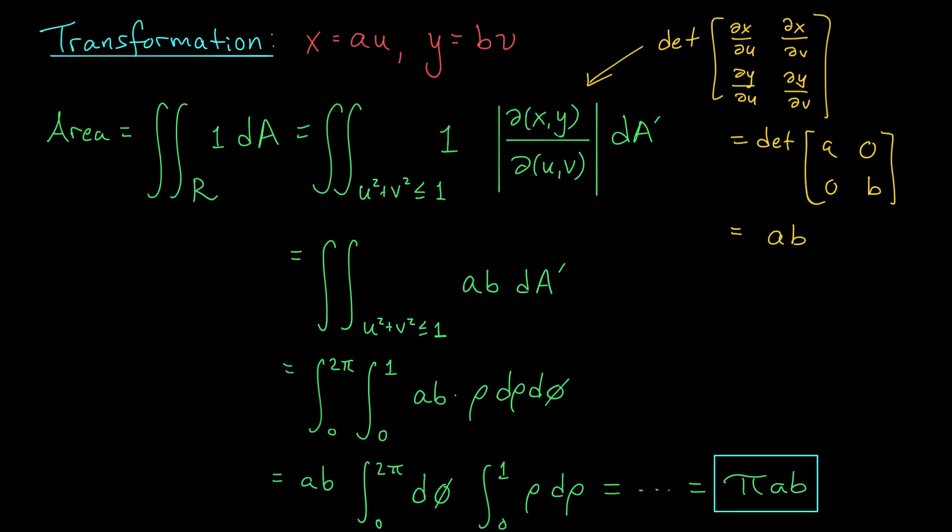Now, hopefully, this answer seems sensible. I mean, after all, this integral up here is the constant ab times the double integral of one over the unit circle. But that should be ab times the area of the unit circle, pi times ab. Okay, seems to make sense.